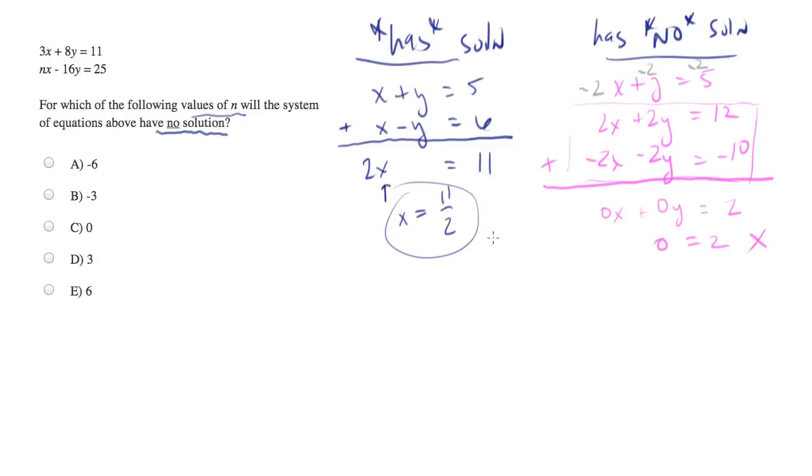All right, so now we're faced with a similar problem up here, but we're asked to actually build a system of equations that has no solution. So let's start with 3x plus 8y equals 11. And this is the equations as we were given them. Let's do nx minus 16y equals 25.